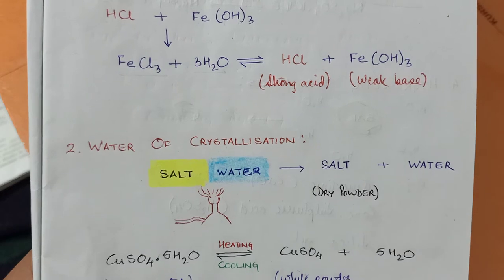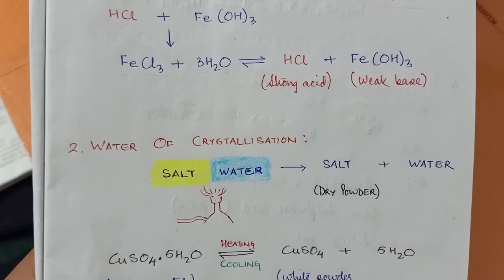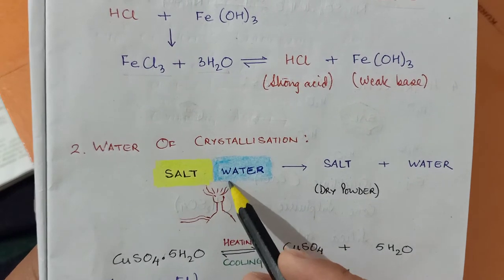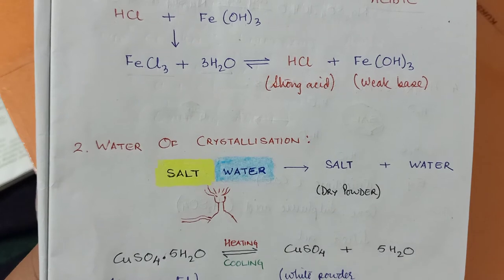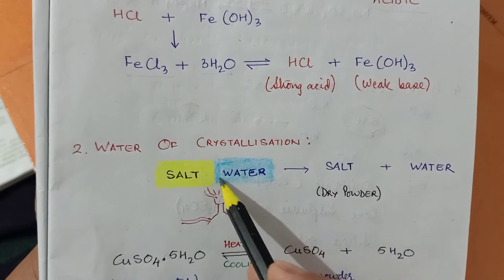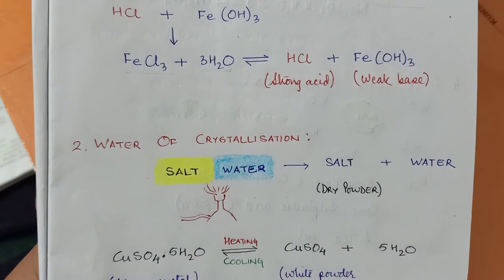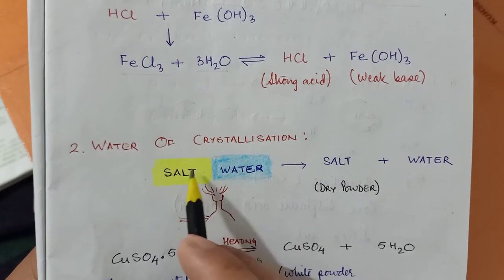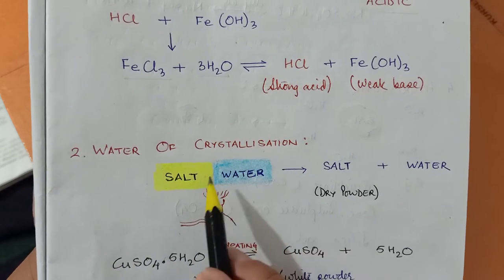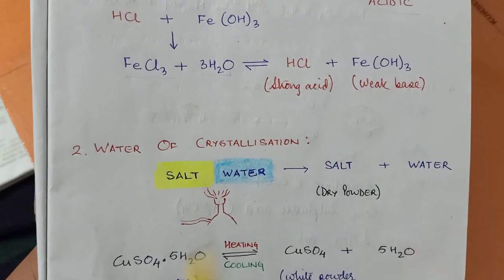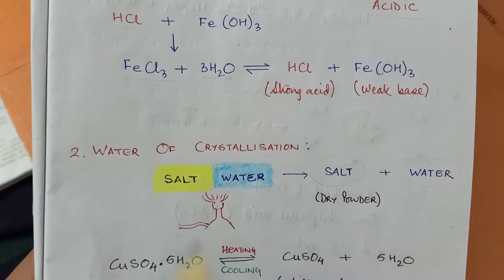Water of crystallization is a definite quantity of water chemically attached loosely with the salt, so that it can be easily removed by heating. If we apply heat — say 100°C — the water in solid form will change into liquid, leaving solid salt behind. So if we heat a salt having water of crystallization, the water will be lost and dry salt will remain.